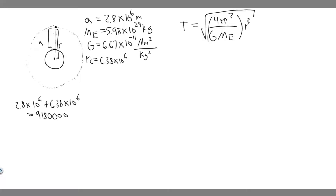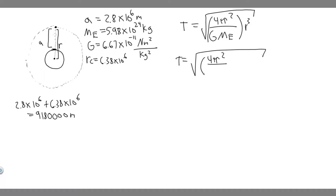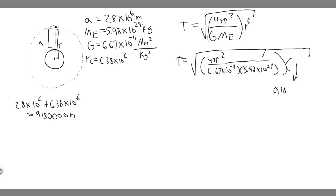Now that we have the radius, we can plug everything into Kepler's formula. So T equals the square root of 4 pi squared divided by G — 6.67 times 10 to the minus 11 — times the mass of the Earth — 5.98 times 10 to the 24 — multiplied by the radius 9,180,000 cubed. Keep in mind the radius is cubed.